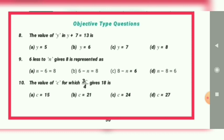6 less than n gives 8 is represented as: 6 less than n gives 8, so 6 less than n means n is a greater number. So we can write n minus 6 gives 8, option A.